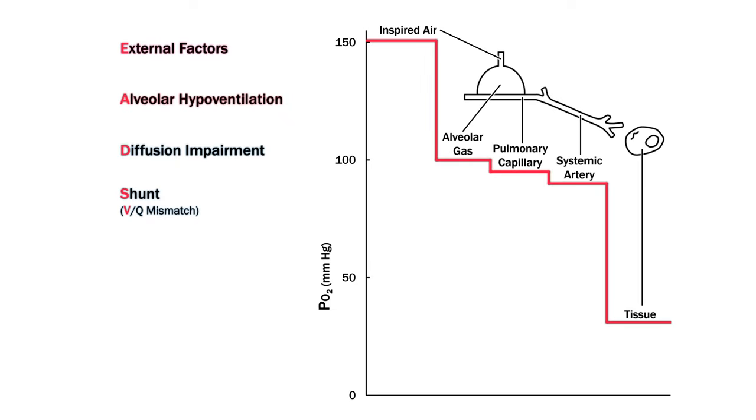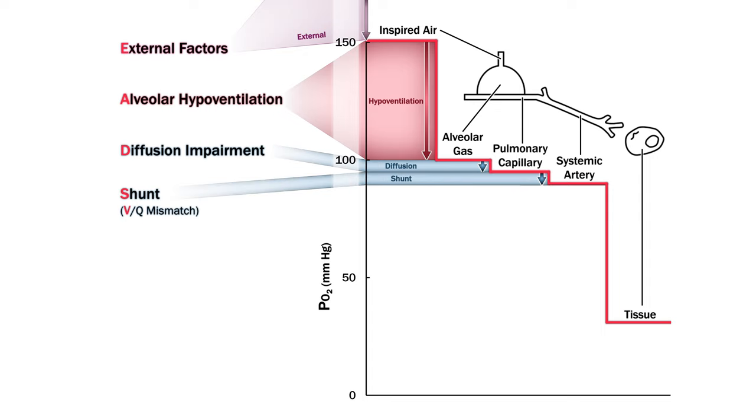We can also look at the oxygen cascade to see where these factors cause hypoxemia. External factors reduce the PO2 of inspired air. Hypoventilation increases the drop to the PO2 of alveolar gas. Diffusion impairment causes a drop from alveolar to capillary PO2. True shunt causes a drop following the pulmonary capillary, though you could argue that other forms of VQ mismatch affects the alveolar gas depending which alveolus you're looking at. Hypoxia from shunt and diffusion impairment create the so-called AA difference between alveolar and arterial PO2.